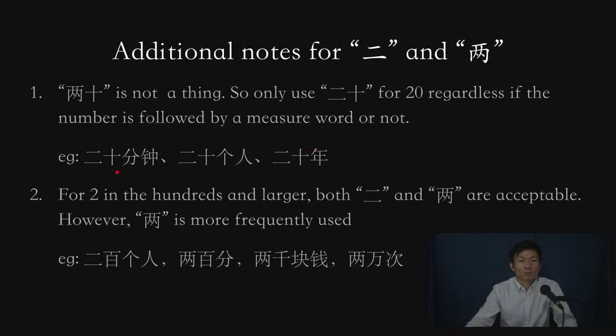For example, two minutes, we would say 两分钟 if it's just two. But if it's 20 minutes, we cannot say 两十分钟. Instead of that, we would just say 二十分钟. 两十 is not a thing. We don't say that at all. For 20, everything just goes to 二十.